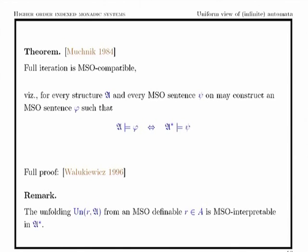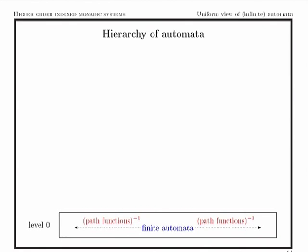This construction is very interesting because it preserves the decidability of the monadic second-order theory: whenever we have a formula on the iterated structure, we may construct a formula for the original structure such that both are equivalent. The proof of this result was first given in 1984 in a short conference paper, and the full proof was given by Walukiewicz in 1996. Another interesting point is that within full iteration you may interpret the unfolding from a given vertex of a structure, which is not possible in the case of basic iteration.